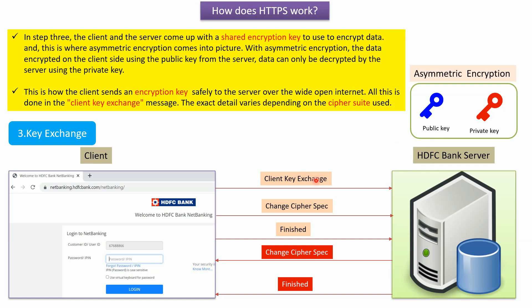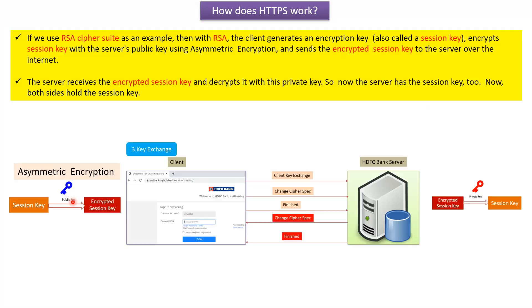The exact details vary depending on the cipher suite used. For example, using RSA cipher suite, the encryption key — called the session key — is generated. This session key is encrypted using the asymmetric encryption algorithm with the public key the client received from the server, creating an encrypted session key. The client sends this encrypted session key to the server over the internet. The server receives it and, using its private key, decrypts the session key. Now both client and server have the same session key.